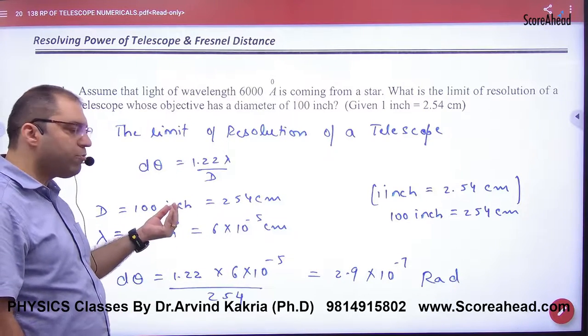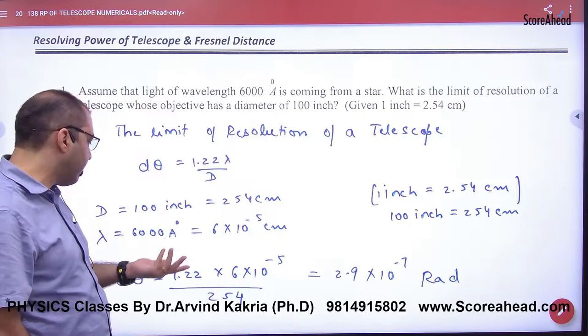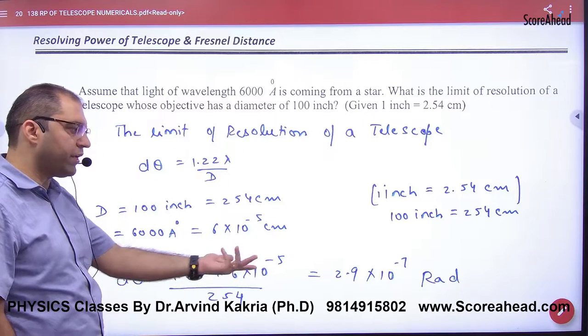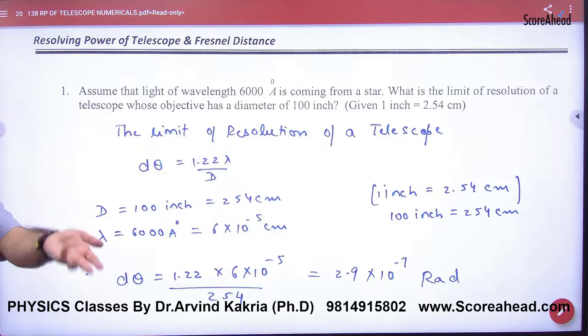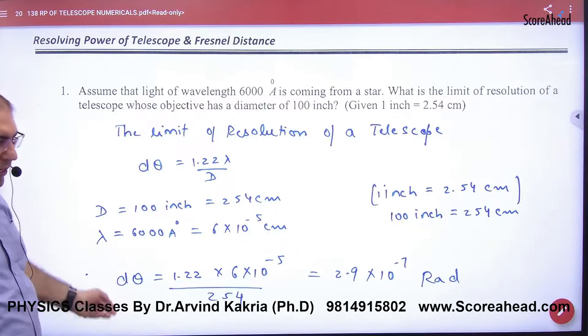But the difference is that you know d in inches. So you convert it to centimeters. Conversion is given. Lambda is given. What is the answer? Do not do anything. It is a formula. But how to solve it? So limit of resolution is one thing. Point number one. Point number two.